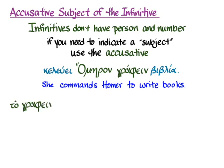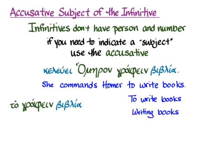You can take the same words and turn it into an articular infinitive: 'to graphene biblia,' which means 'to write books' or 'writing books.' We give an infinitive an article in order to use that verbal noun in the different cases — we call that an articular infinitive. In this instance, I'll leave it nominative and make a nominal sentence: 'to write books is good' — agathon.